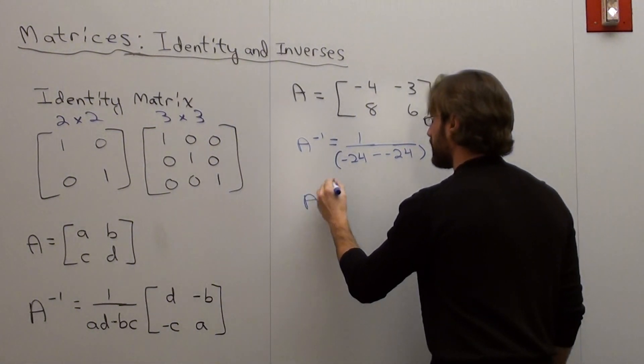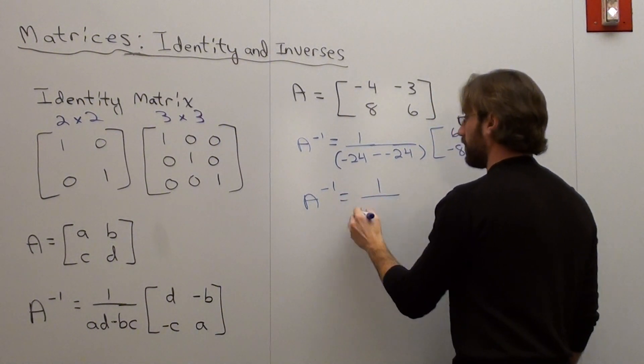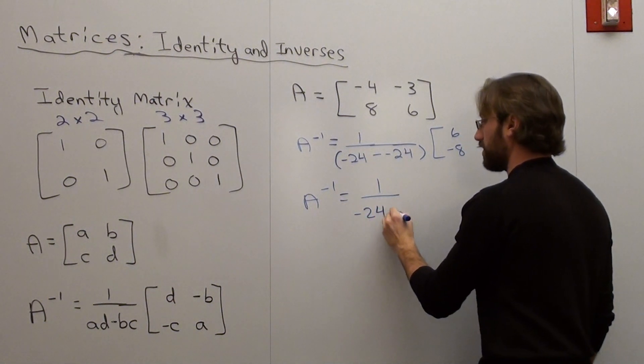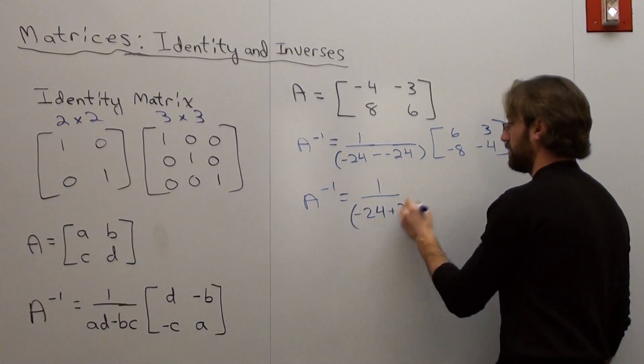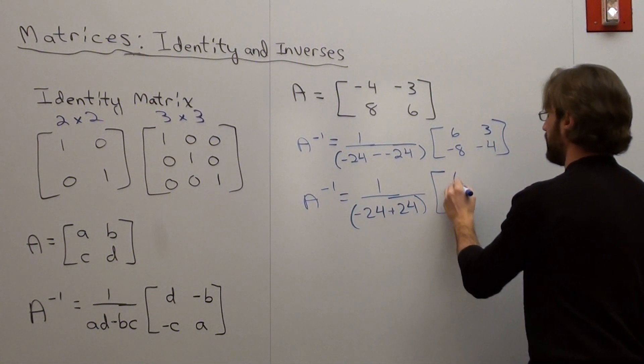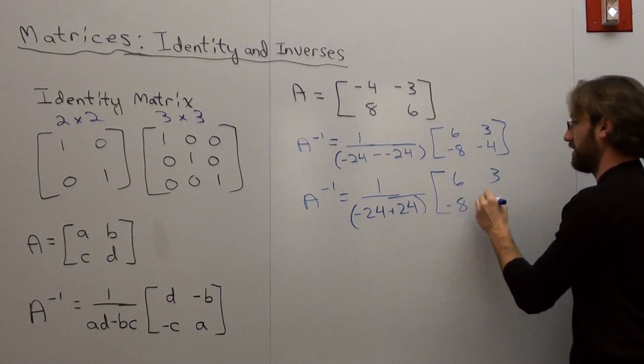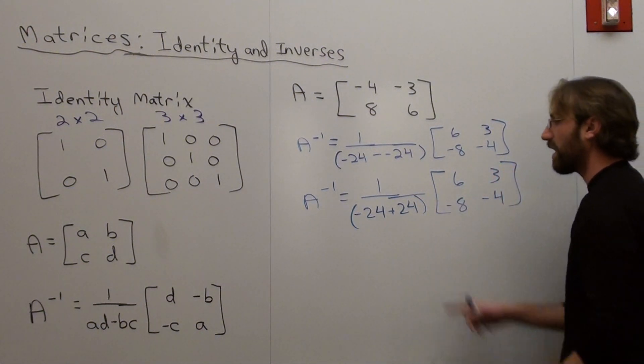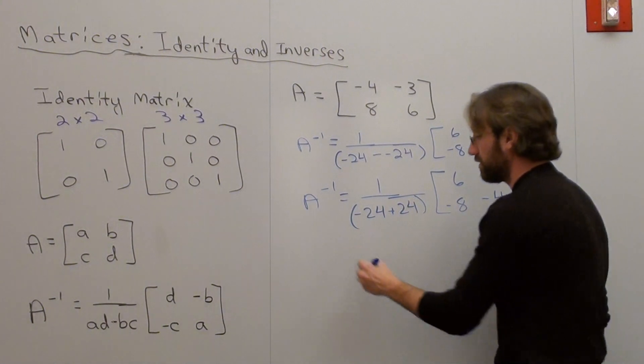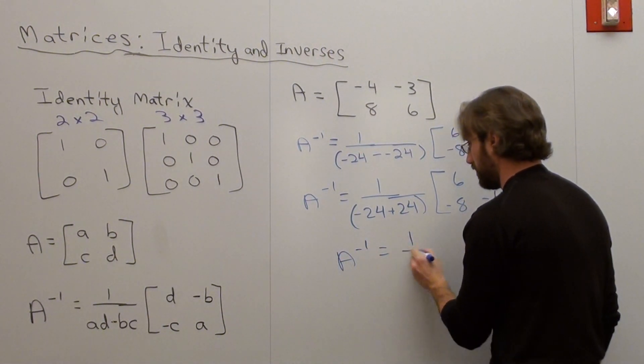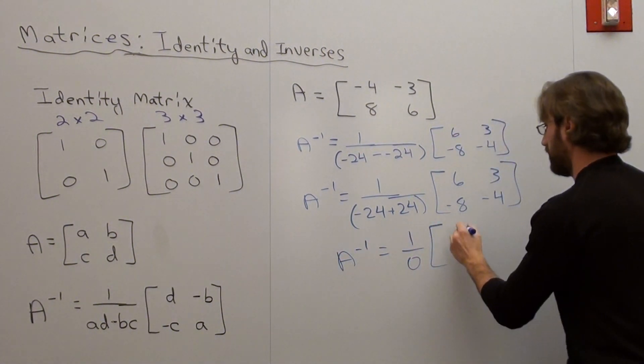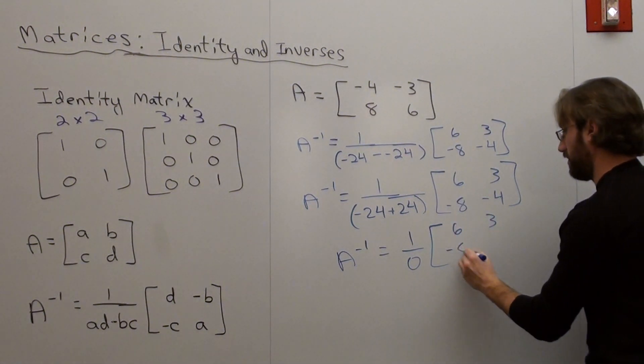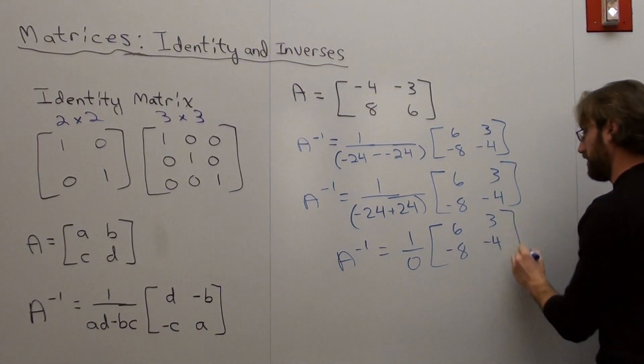That's the inverse is equal to 1 over negative 24, plus 24, 6, 3, negative 8, negative 4. That denominator is 0, 6, 3, negative 8, negative 4.